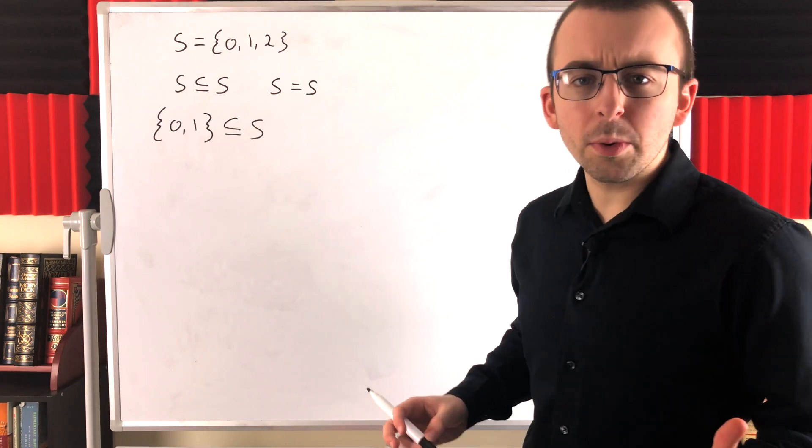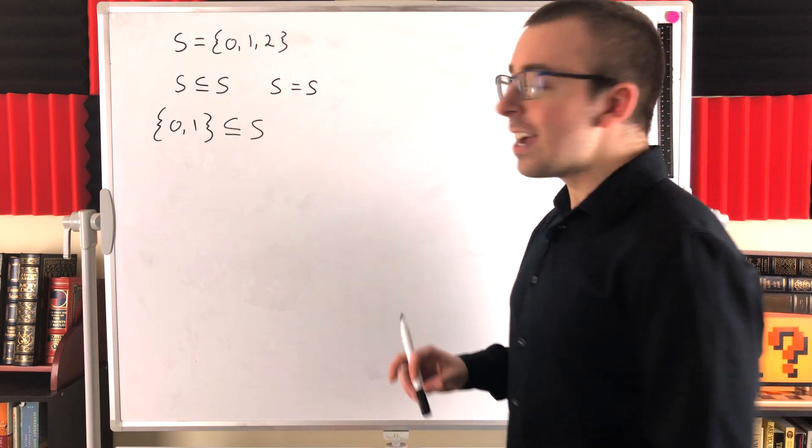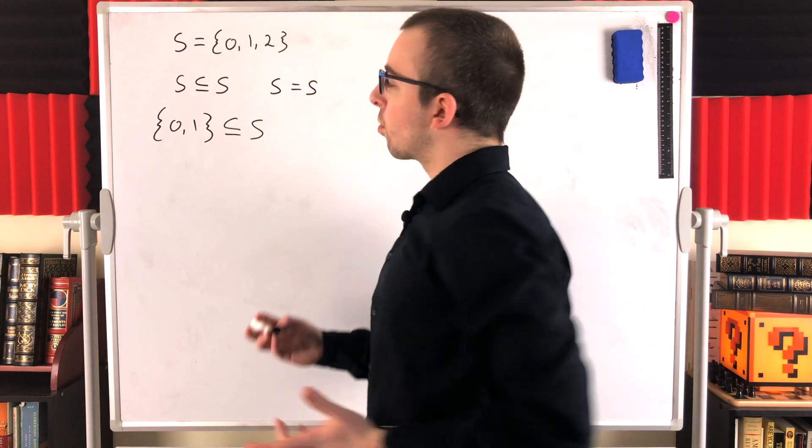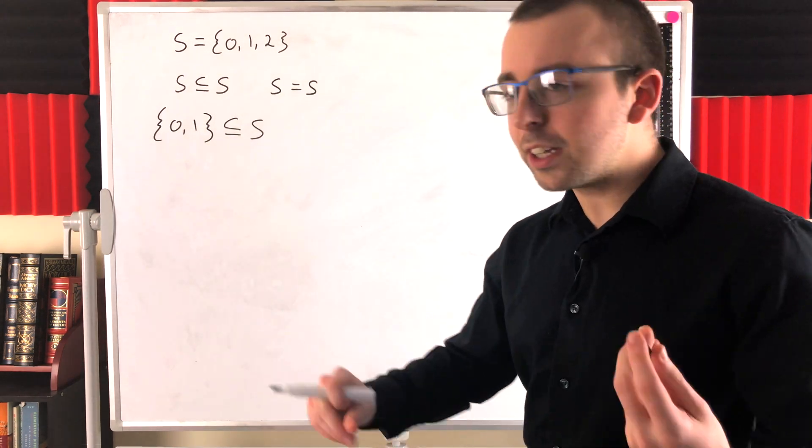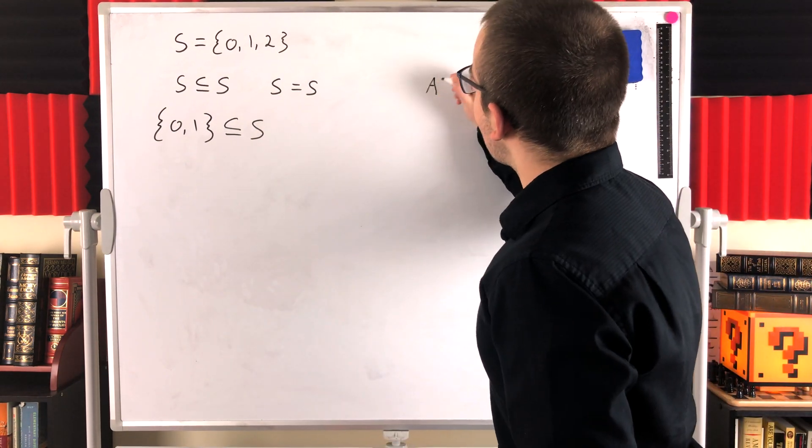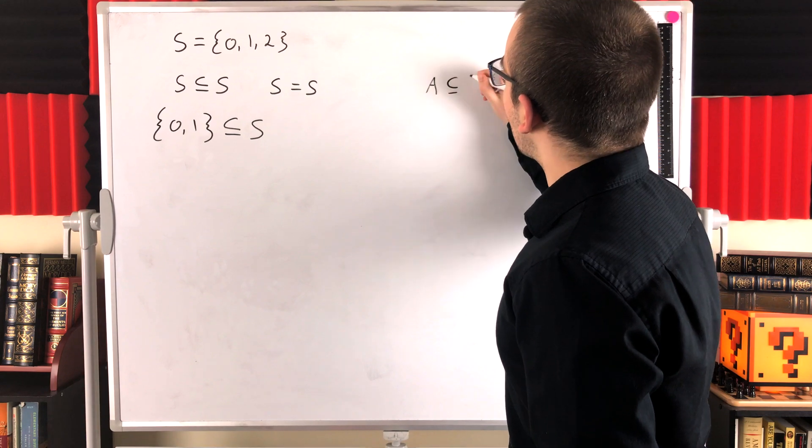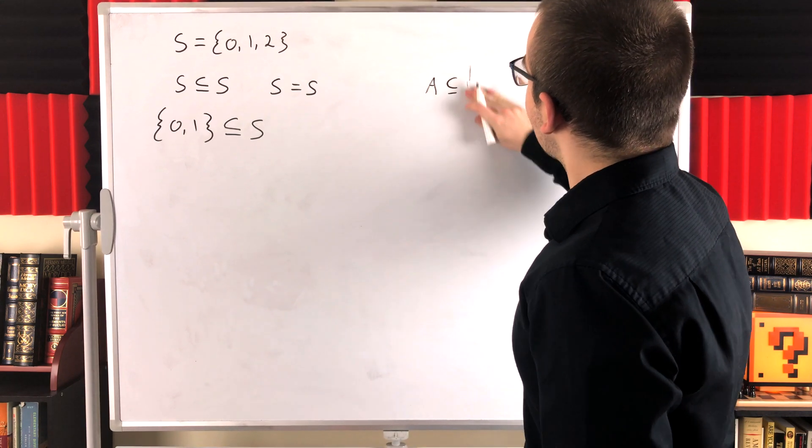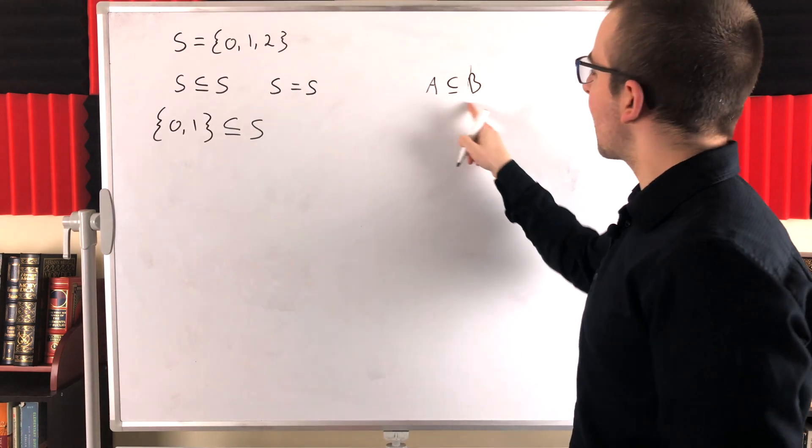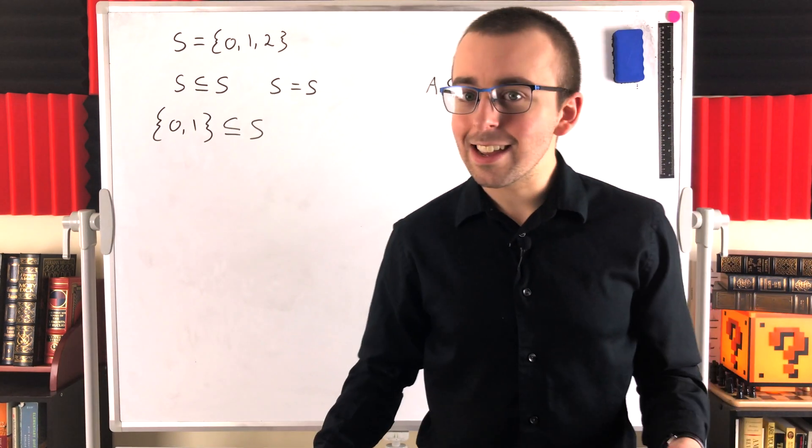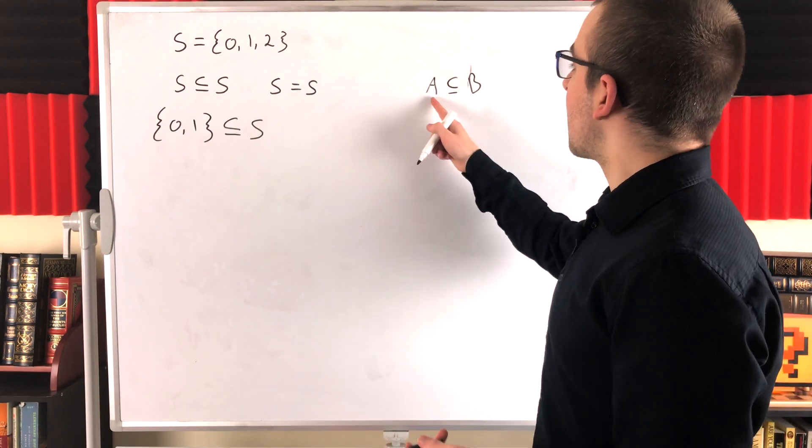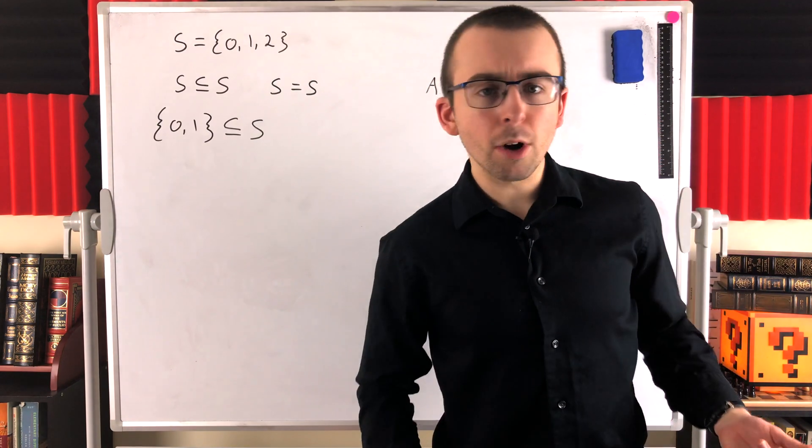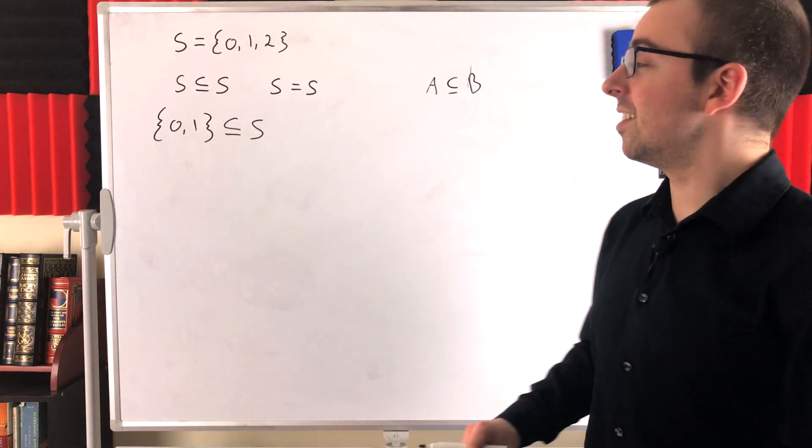And you might wonder, how do we denote that? Is there a special symbol? This, of course, is the general subset relation symbol that you'll usually see. So, if we have two sets, A and B, and we write that A is a subset of B, like that, that just means that A is a subset of B. A might be a proper subset, might be an improper subset. All we know is that it is a subset.